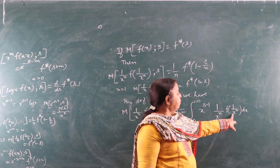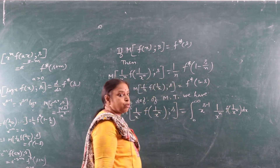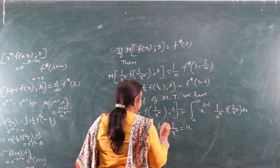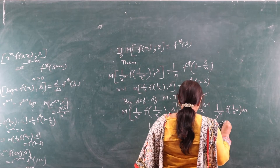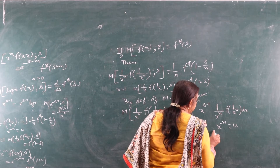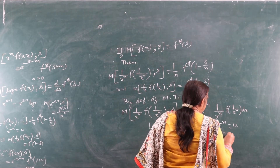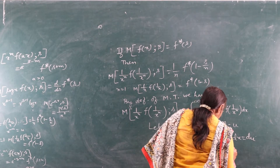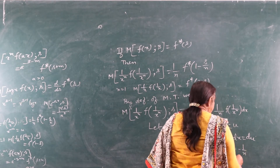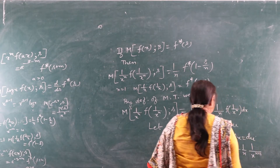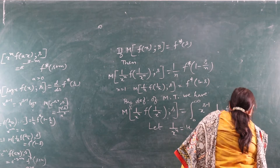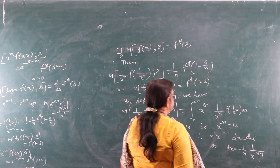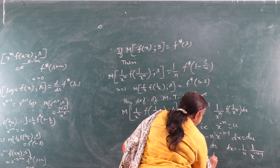We put u = 1/x^n. Let x^(−1/n − 1) dx = du. Therefore, differentiating, we get 1/x^(n−1), which equals u^(−1).